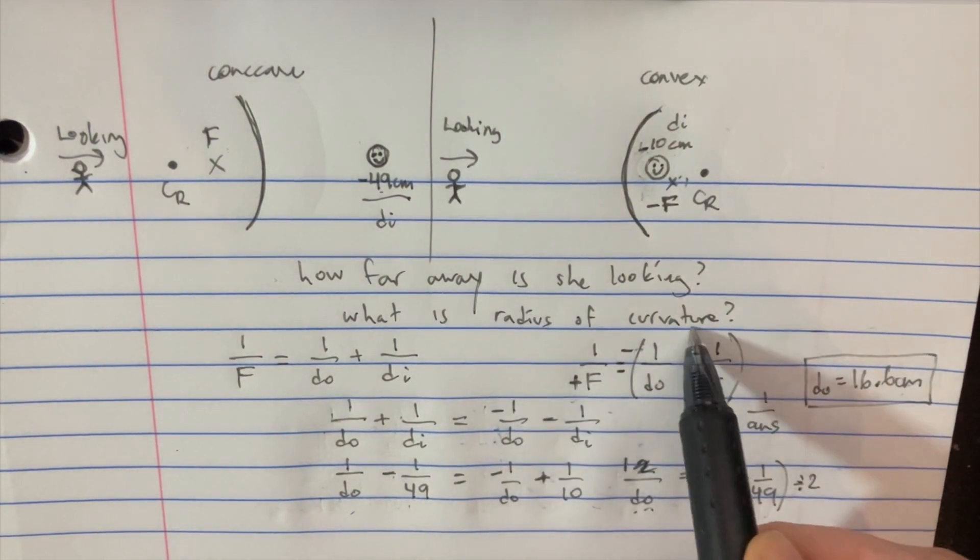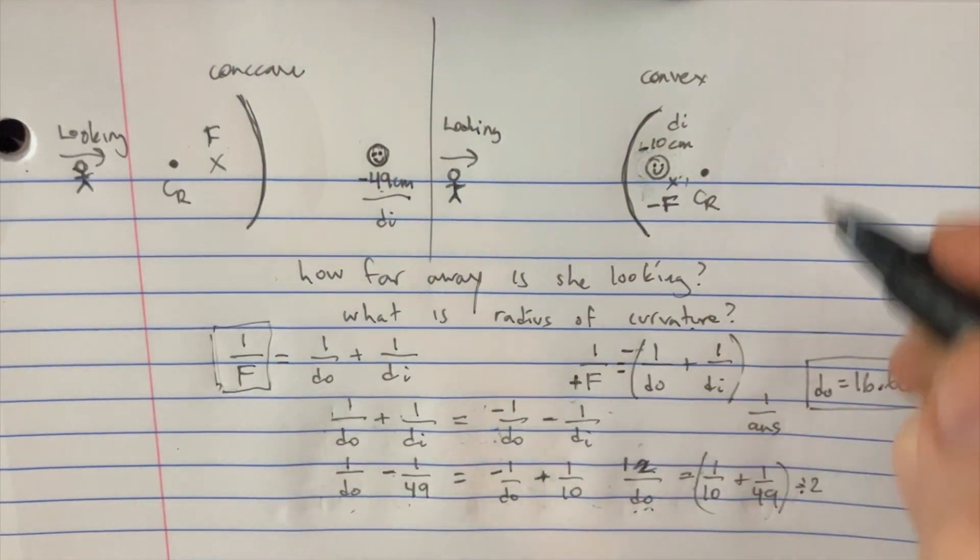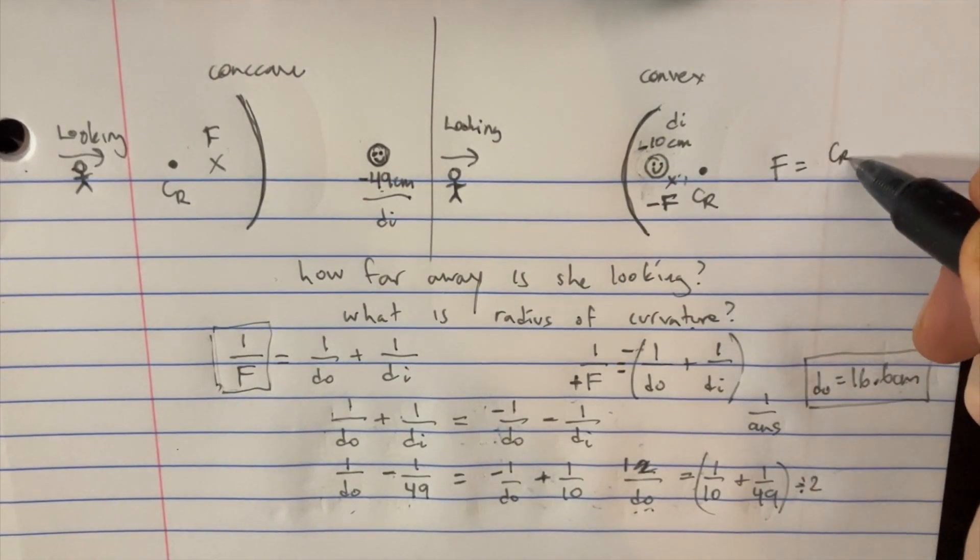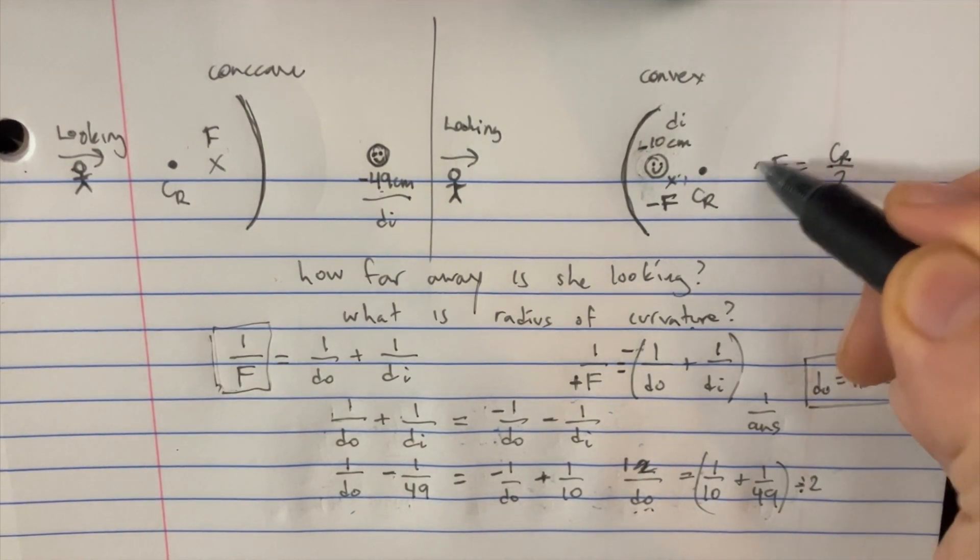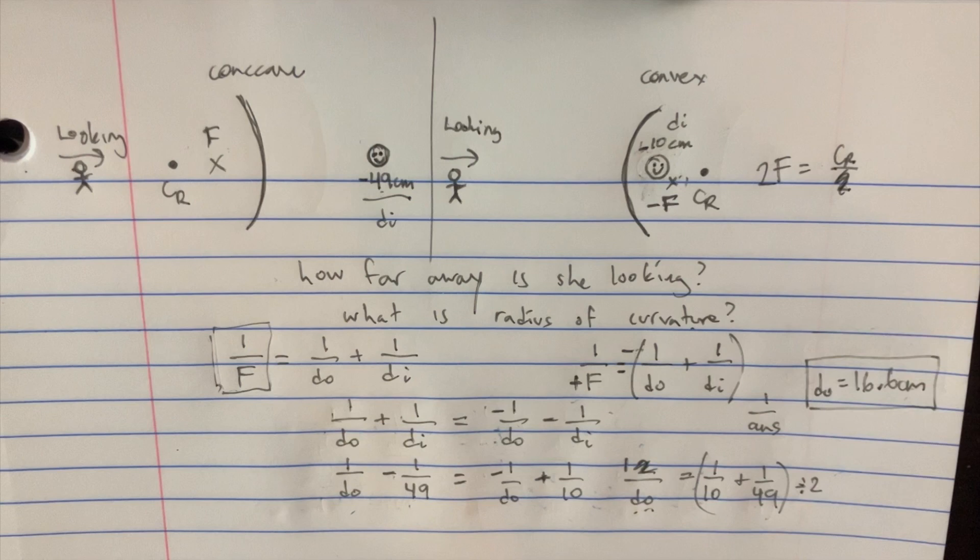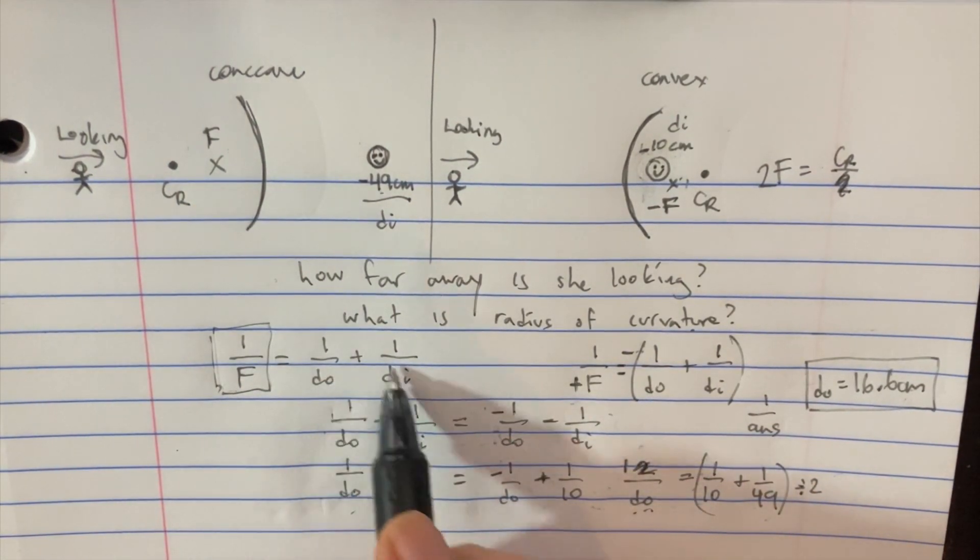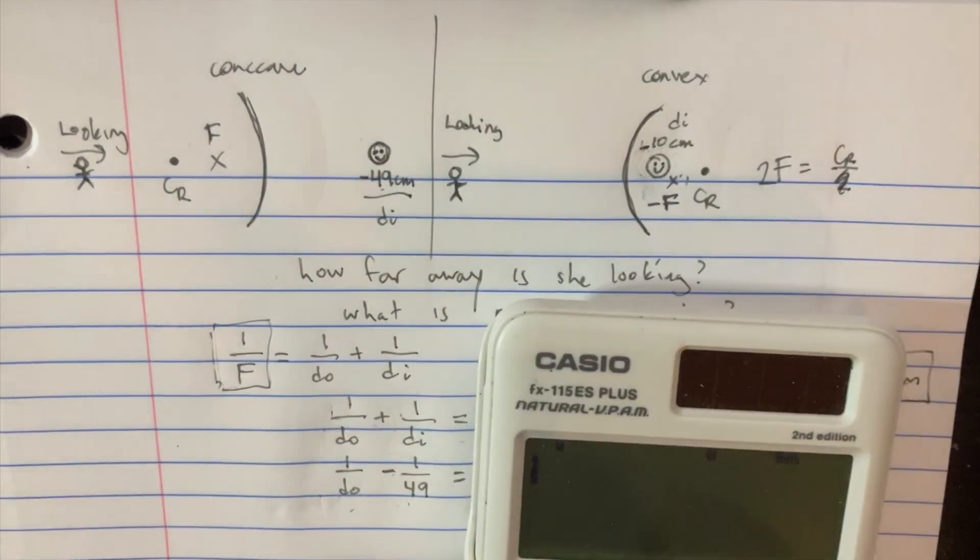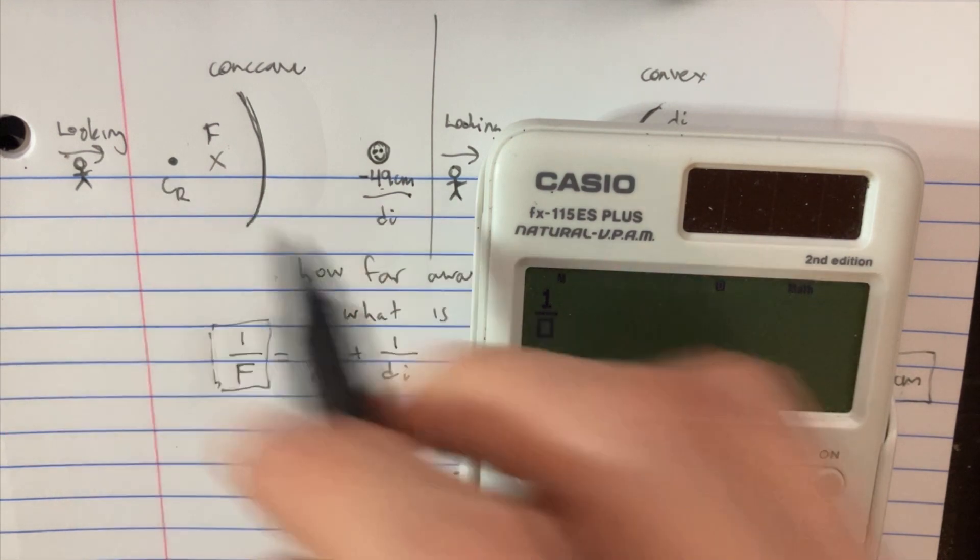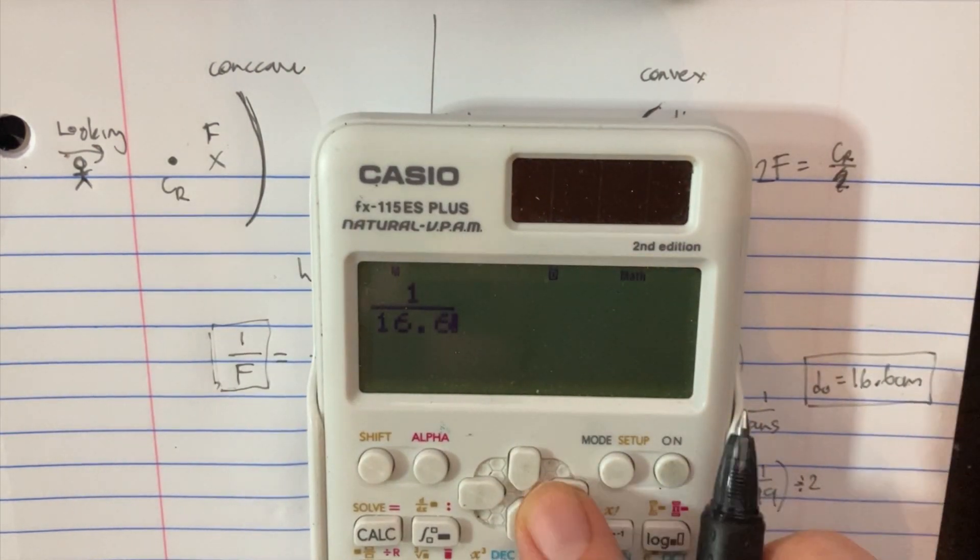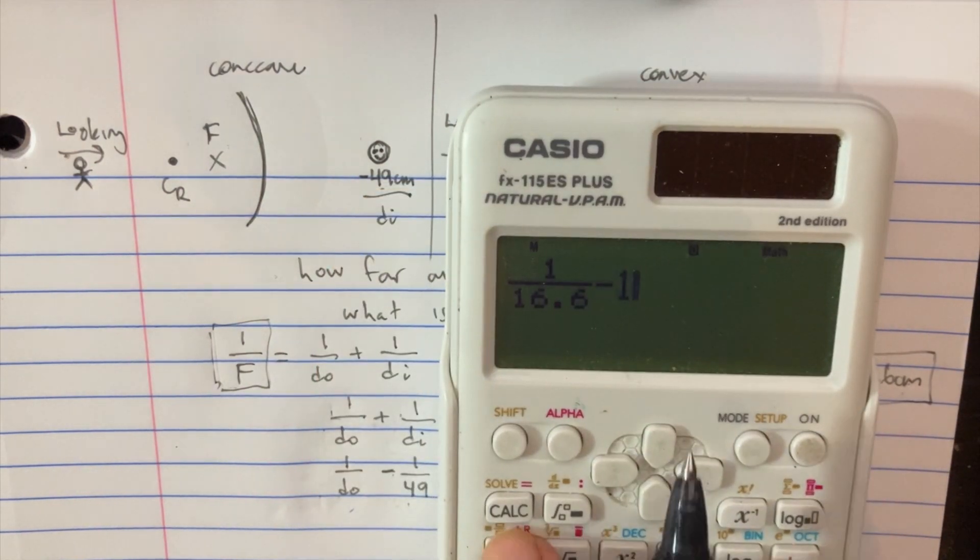Now in order to find the radius of the curvature, let's try to solve for this F because F is equal to the radius of the curvature divided by 2. And so if we take our F and multiply that by 2, we'll get the radius of the curvature. So what is F, 1 over F? That's just going to equal this expression here. Let's just solve it for this side. So 1 over the object length was supposed to be 16.6, and then we're just going to subtract that number right there, so 1 over 49.